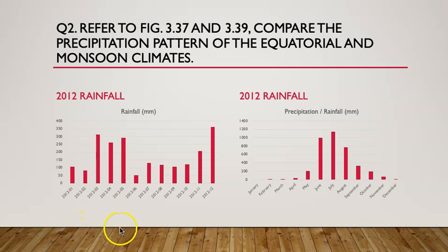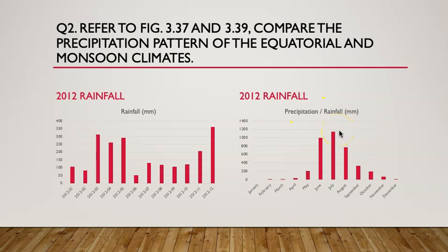For the second comparison, the highest rainfall for monsoon is in June to August. However, for equatorial, June to August has relatively low rainfall. Lastly, for equatorial, towards the year end we start to have an increase in rainfall. However, for monsoon, there is a gradual decrease in rainfall where it starts to become a dry season.